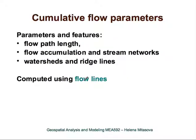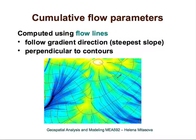What are cumulative flow parameters? These are parameters that are based on flow tracing, and they are cumulative. That means they do not characterize topography at a single point, but over a certain area or over a certain length along the flow path. Among them are flow path length, flow accumulation — which can be used to extract stream networks — and then related to flow accumulation are watersheds and ridge lines.